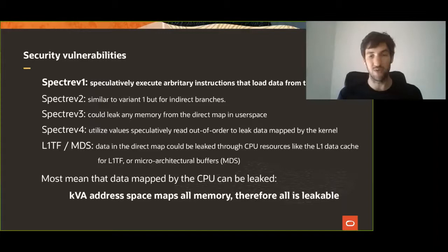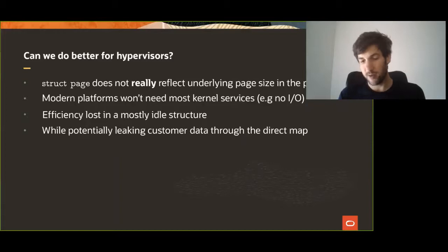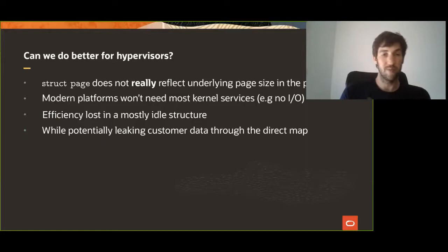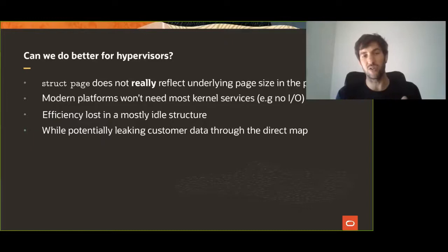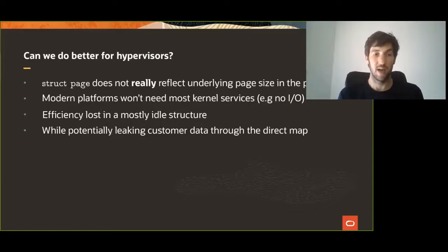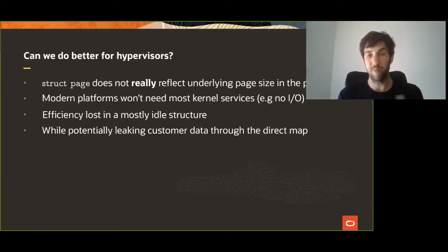So the main premise I'm trying to raise here is: can we do better for hypervisors? The problem we see is that a given struct page does not really reflect what goes in the page tables. And if you look at more modern hypervisors, you won't be needing the majority of kernel services, say if you were just doing CPU, memory, and PCI device assignment. But under those circumstances, we are essentially losing a lot of efficiency to what represents a largely idle data structure throughout the guest's or host's lifetime, while potentially unnecessarily mapping all customers' data when we probably don't need to.